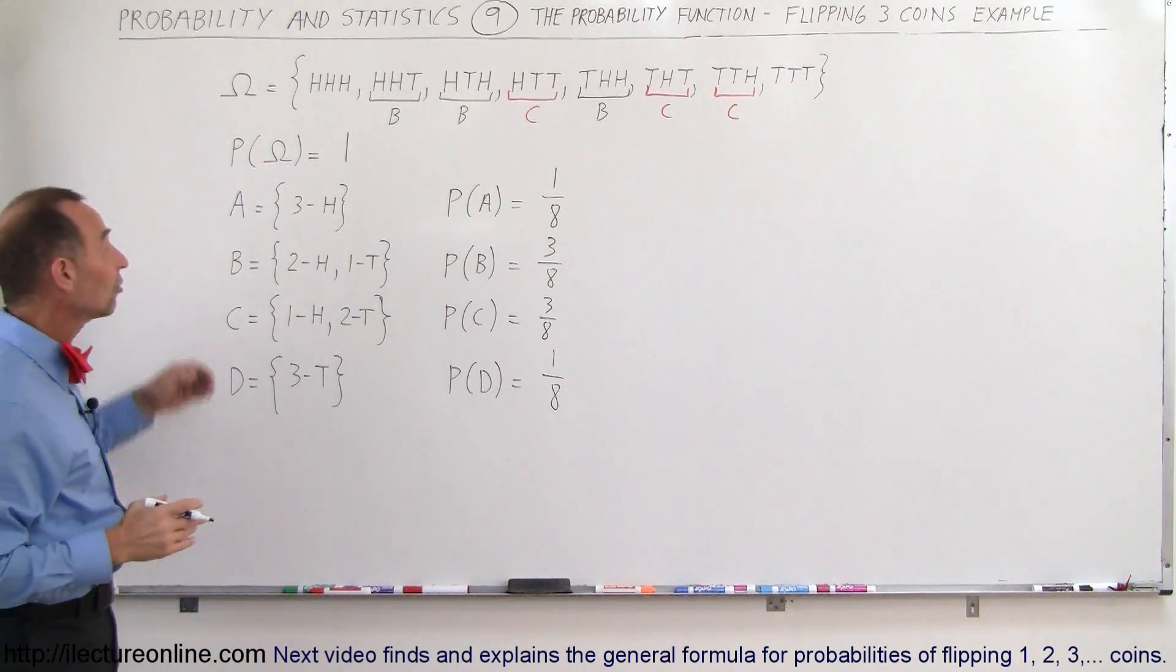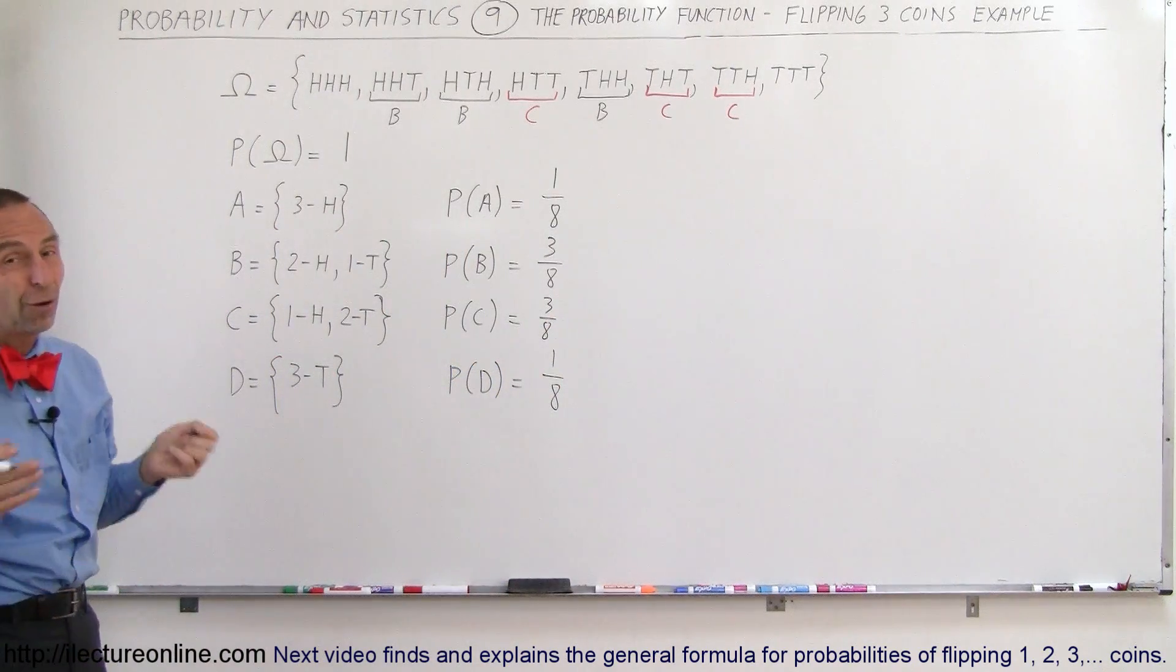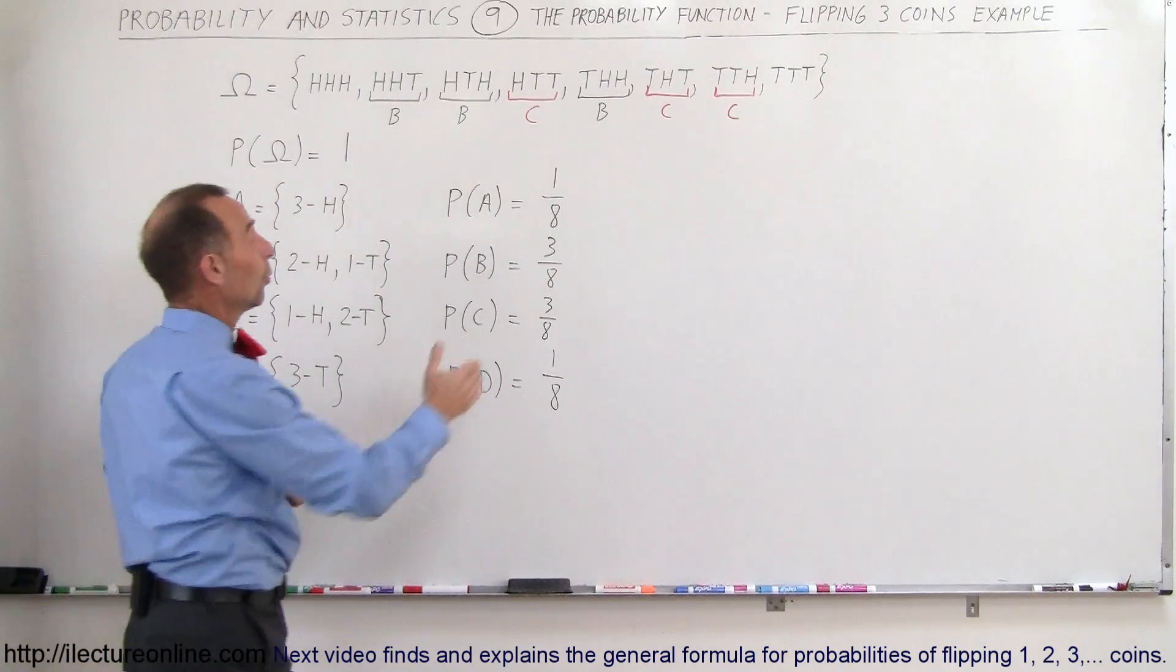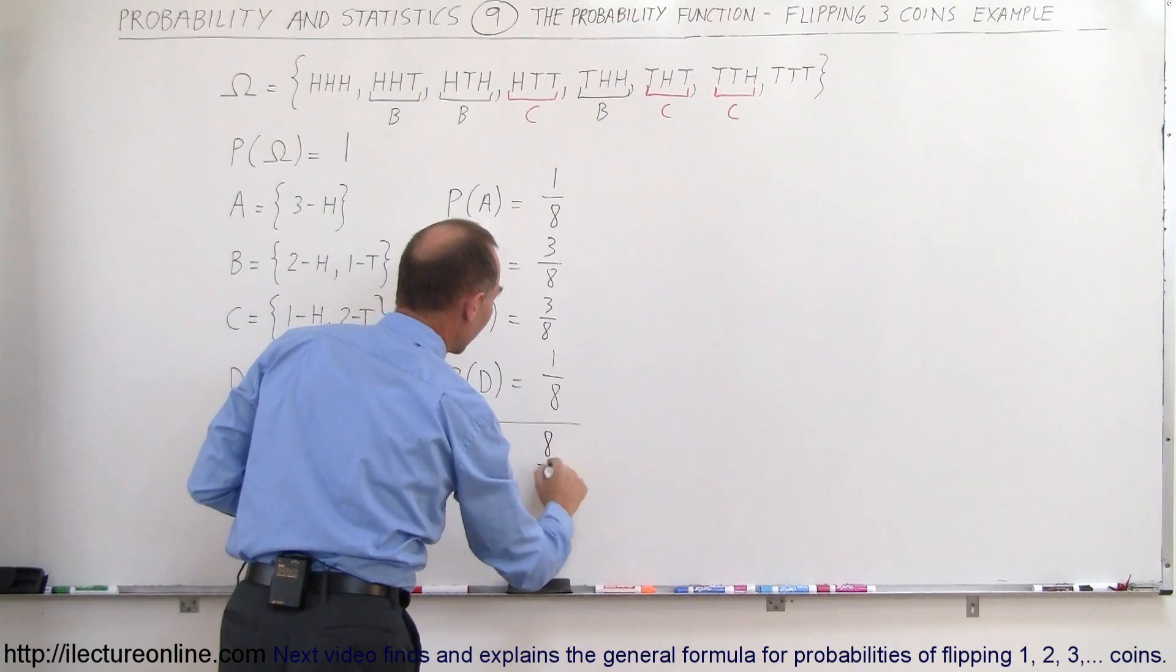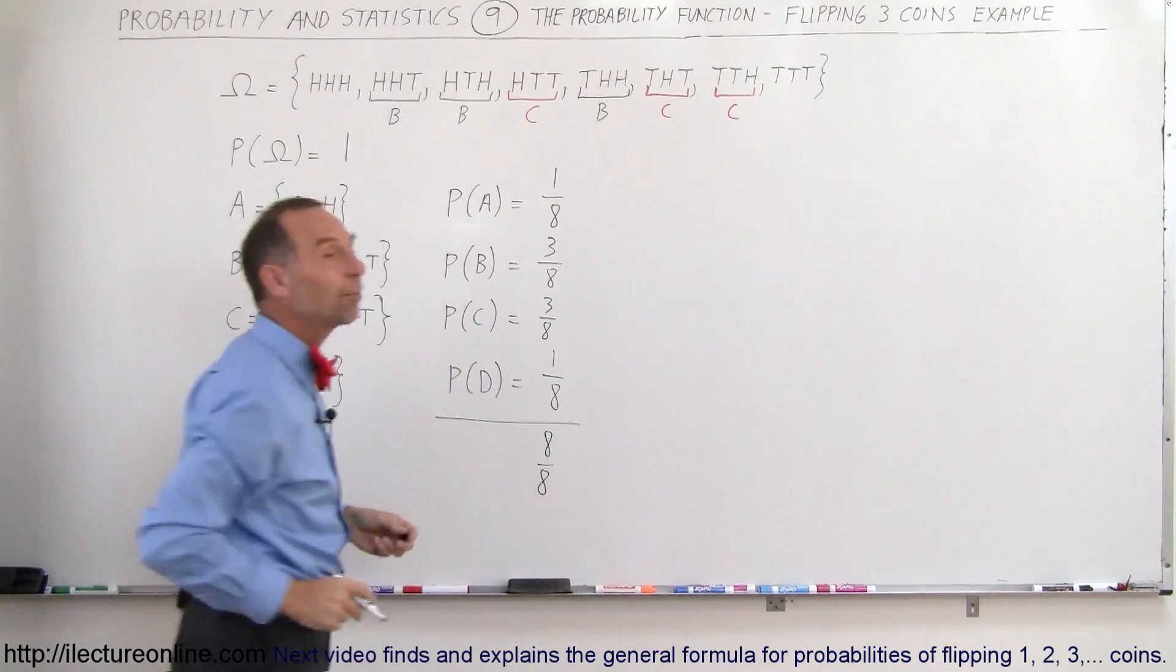Now, since that represents all possible outcomes, hopefully that will add up to one. So one eighth plus three eighths plus three eighths plus one eighth, if you add them all up, that's eight over eight. So that represents the entire sample space.